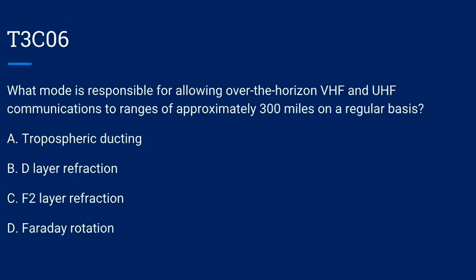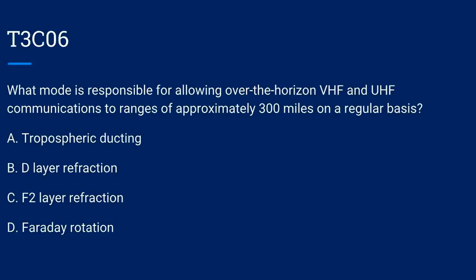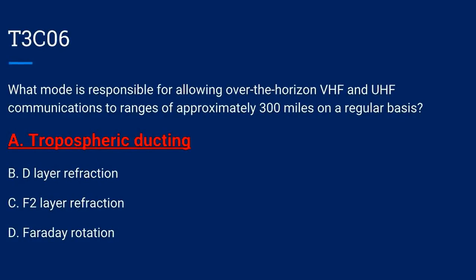T3C06. What mode is responsible for allowing over-the-horizon VHF and UHF communications to ranges of approximately 300 miles on a regular basis? A. Tropospheric ducting. B. D layer refraction. C. F2 layer refraction. Or D. Faraday rotation. The correct answer is A: tropospheric ducting.